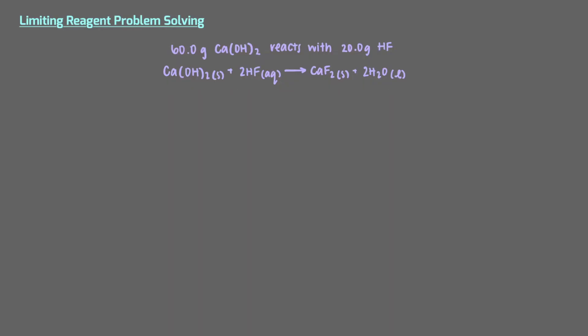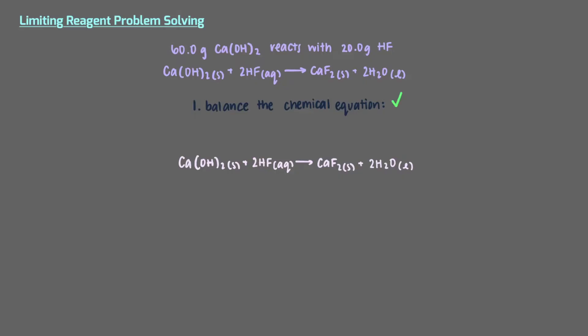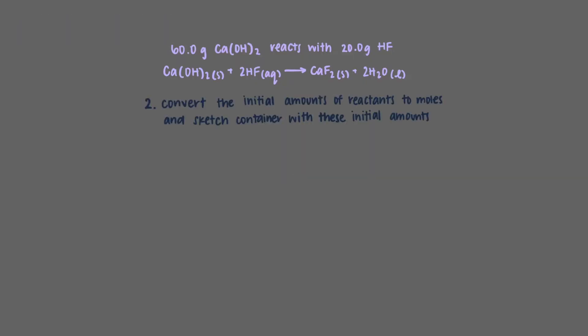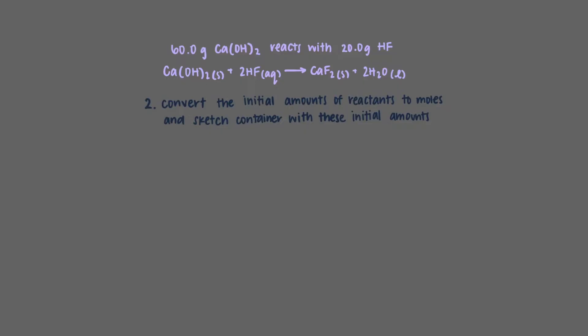First things first, we have to make sure the equation is balanced. In this case, we've been given the balanced chemical equation, so we can move on to step 2. The second step when solving these types of problems is to convert the starting amounts to moles.